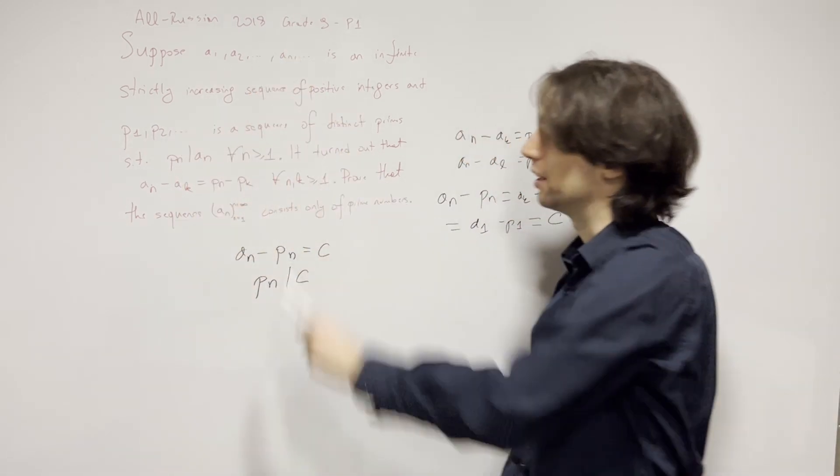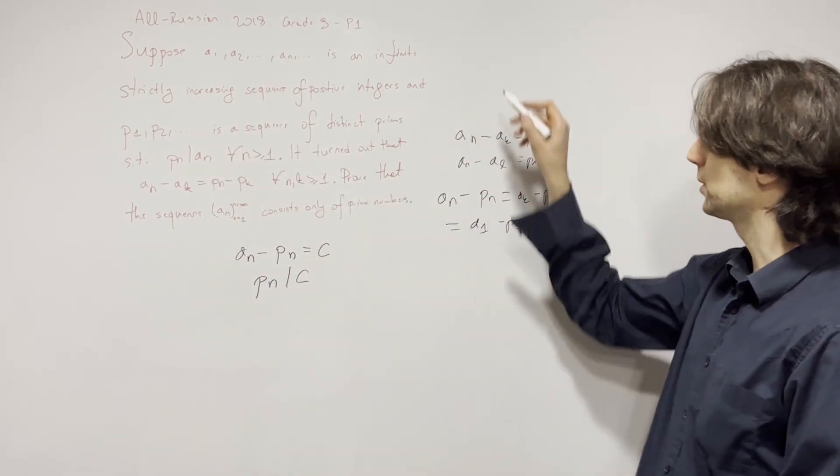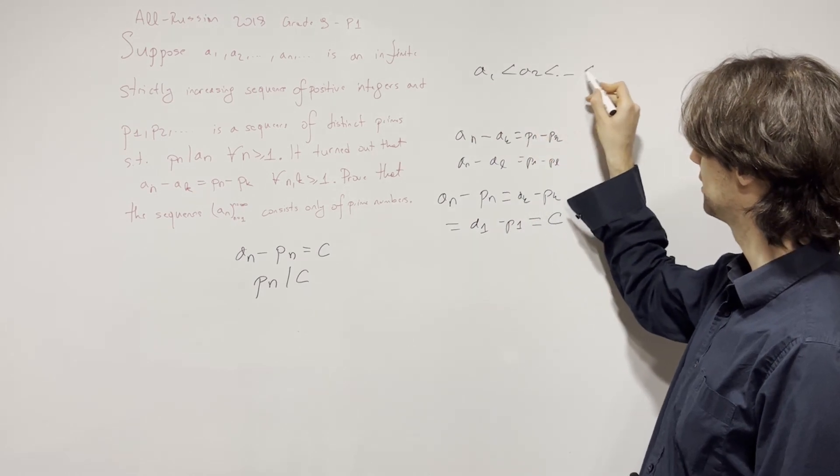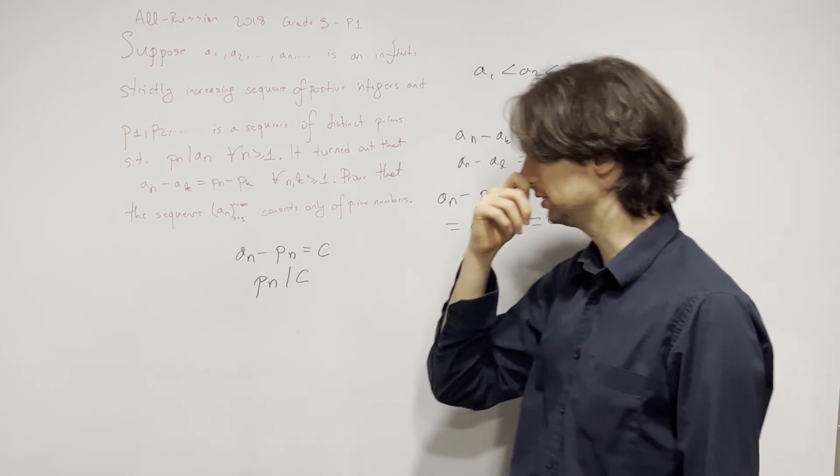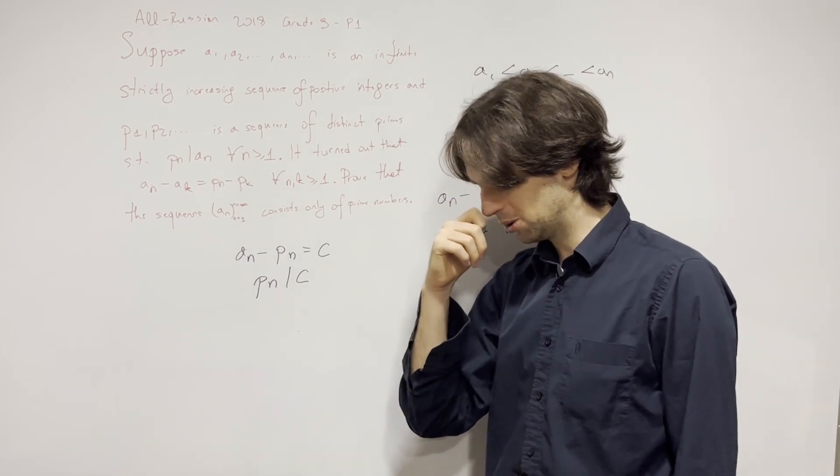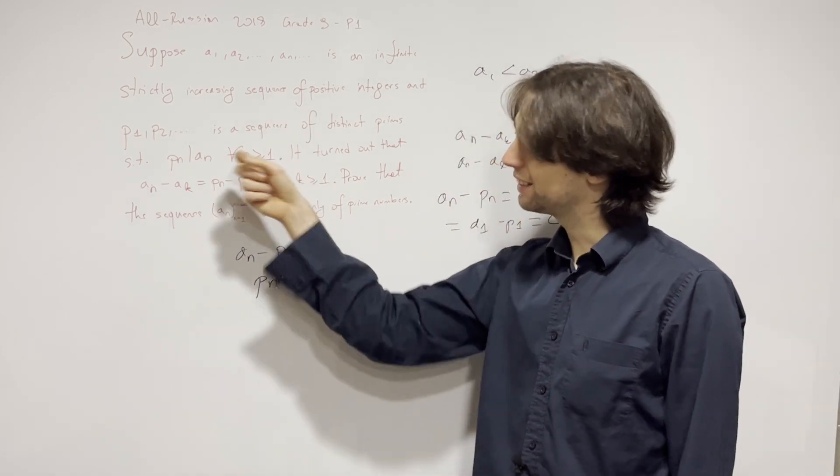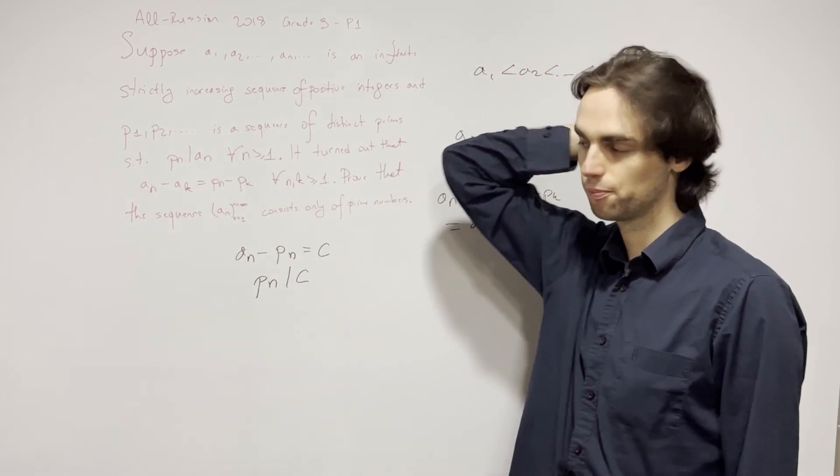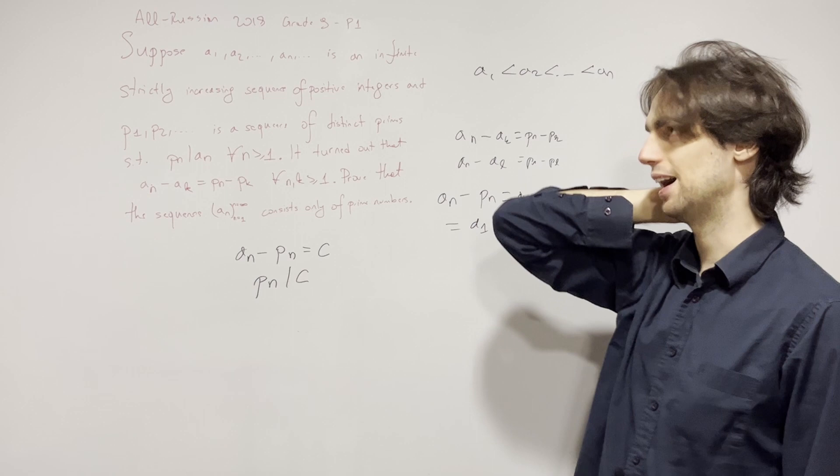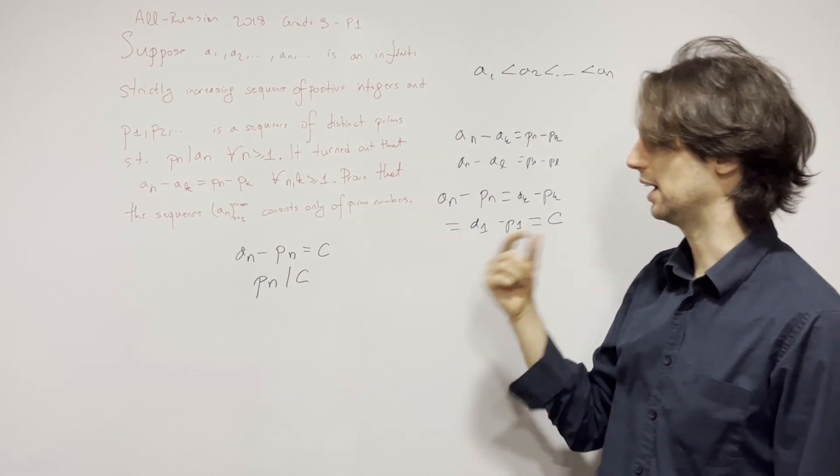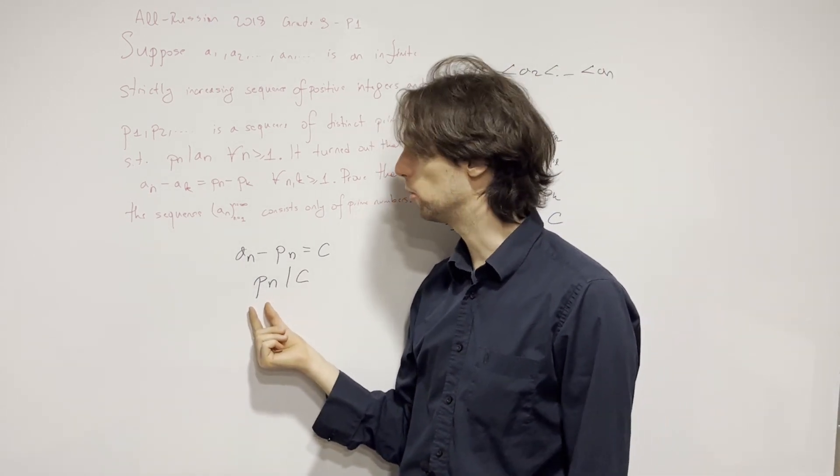This sequence a_1 through a_n is strictly increasing: a_1 is less than a_2 is less than a_n is less than everything else. And p_n keeps dividing these four terms.